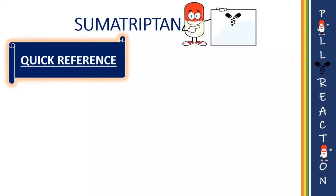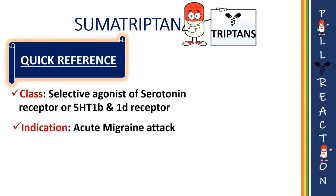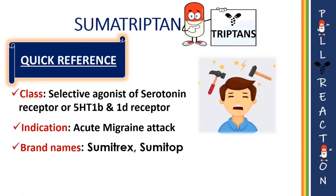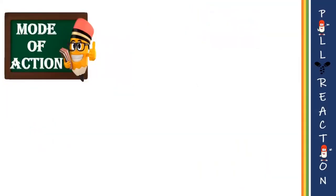To begin with, let us have a quick reference of sumatriptan, also known as triptans. It is a selective agonist of the serotonin receptor, also known as 5-hydroxytryptamine 1B and 1D receptor, which is located in cranial blood vessels. Clinically, sumatriptan is used for treating acute migraine attacks. Sumatriptan is sold under the brand names Imitrex, Sumatop, and so on.